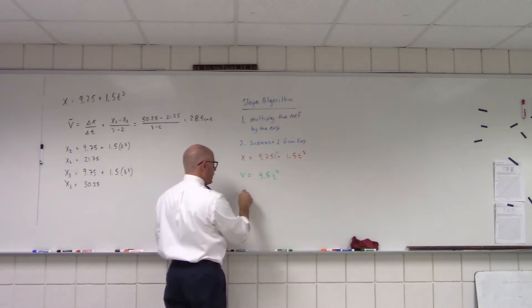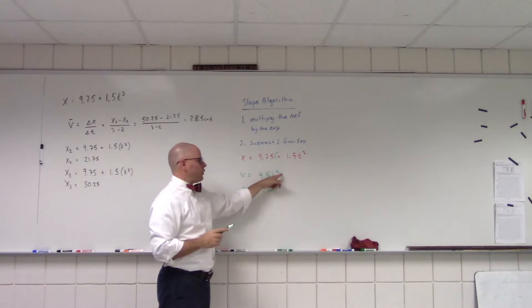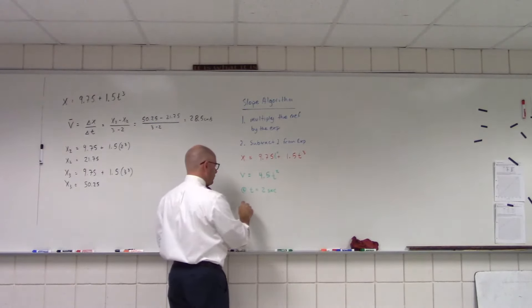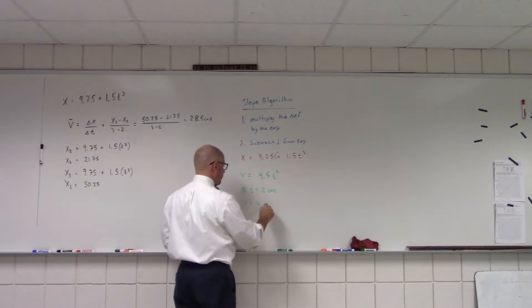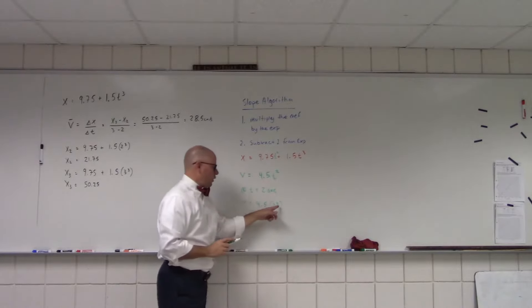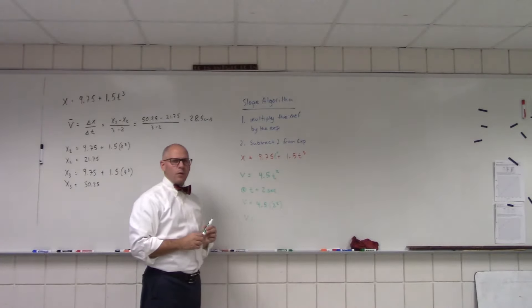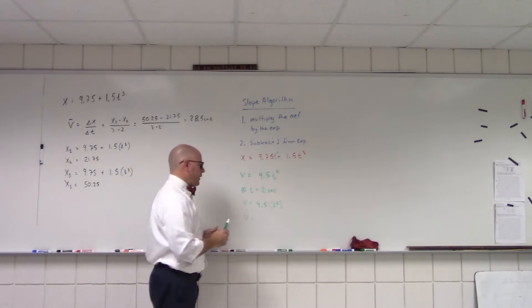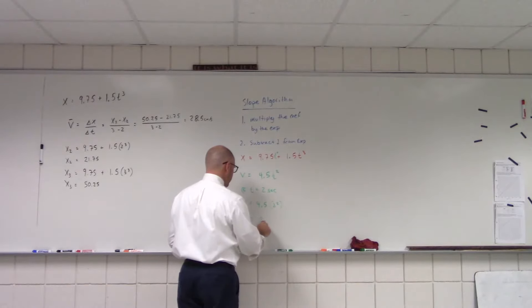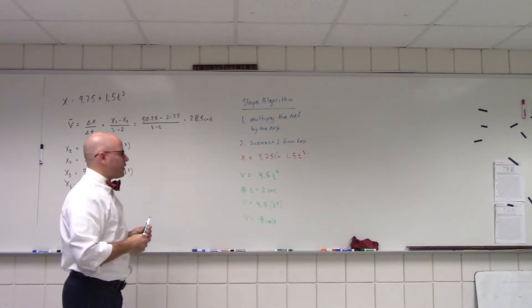And they want the instantaneous velocity at t is equal to 2 seconds. Well, if I plug in 2, 2 squared is 4. 4.5 times 4. Well, 4 times 4 is 16. Plus 2, let's say 18. So, it's 18 centimeters per second.